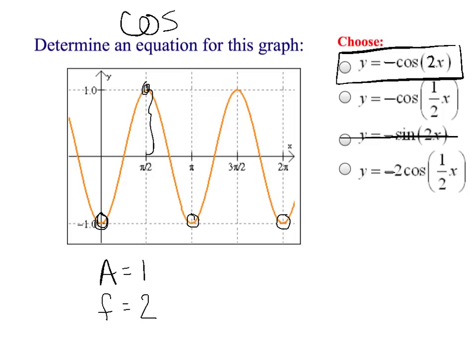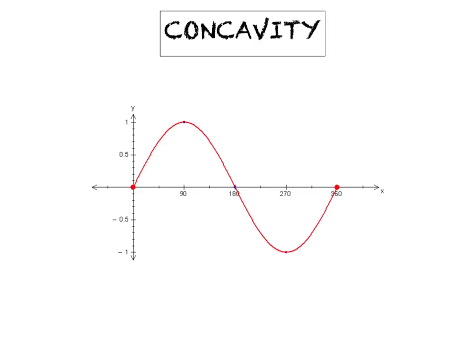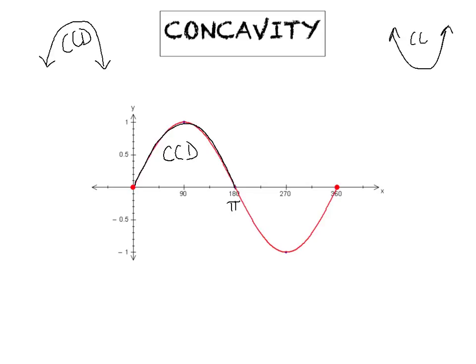Let's introduce the idea of concavity as a way of describing the curvature of a graph, starting with the sine curve. From 0 all the way until pi, this graph is concave down — it's curling downward, like a frowny face. From pi until 2 pi, we're concave up, like a happy face. Frowny face is concave down, happy face is concave up. Concavity for sine is straightforward.